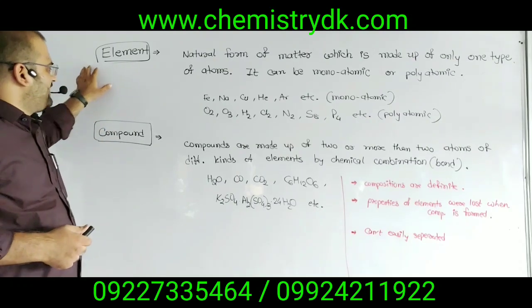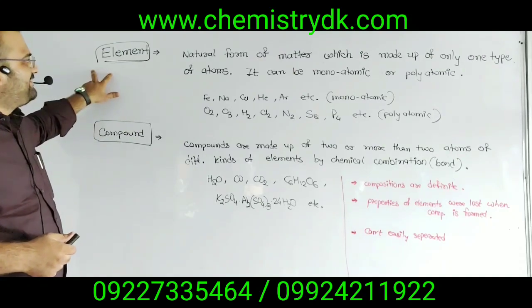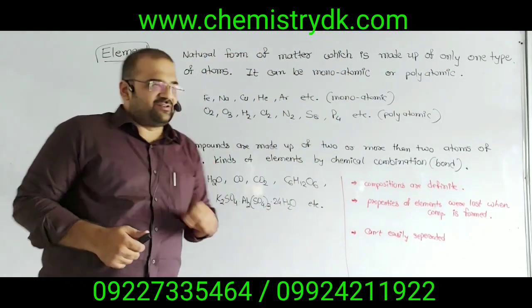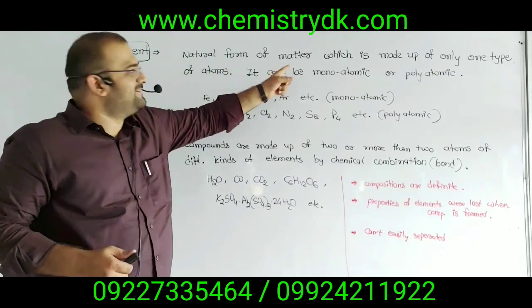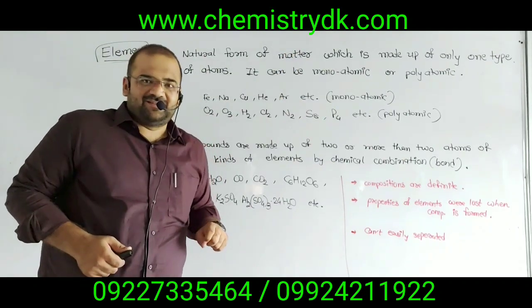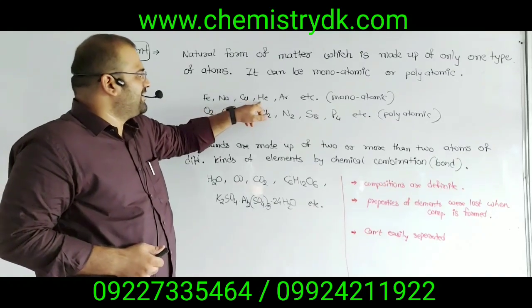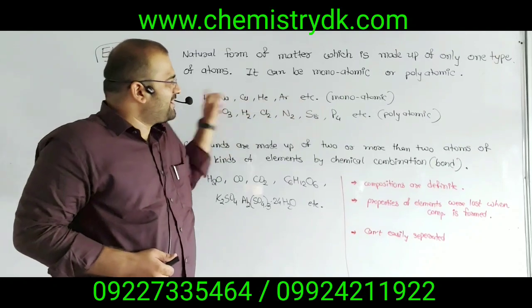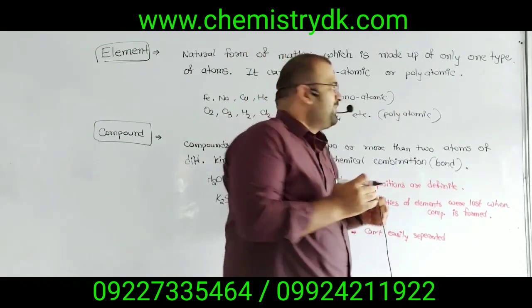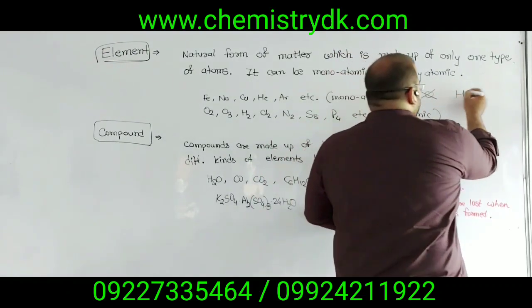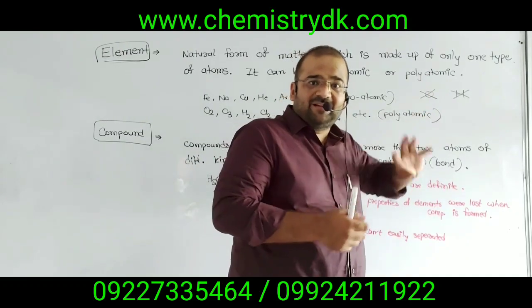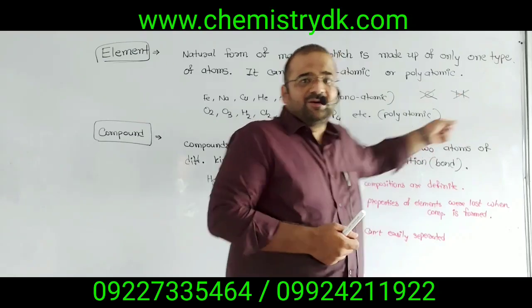Elements are the natural form of matter which are made up of only one type of atom. They can be monoatomic or polyatomic. Examples of monoatomic elements: Fe, Na, Cu, He, Argon, etc. Note that a single O atom is not considered an element in nature, because isolated O does not exist freely — it readily combines with other elements. So O2 is an element and O3 is an element.